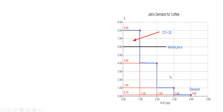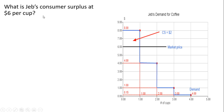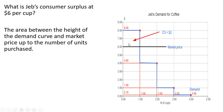Let's talk about calculating consumer surplus. What is Jeb's consumer surplus at a price of $6 per cup? We find the price, walk it across horizontally, bump into the demand curve, and we see that Jeb will buy one cup of coffee. Consumer surplus is just the difference between the maximum Jeb is willing to pay and the market price. When Jeb buys one cup, he values it at $8 but only pays $6, so that difference represents consumer surplus of $2. We can think of consumer surplus as the area between the height of the demand curve and the market price up to the number of units purchased — in this case, one cup at $6.